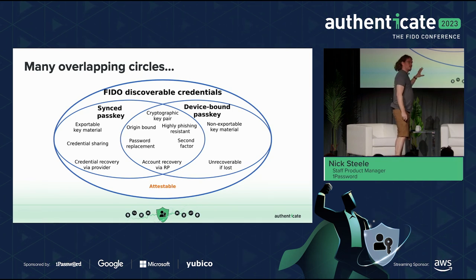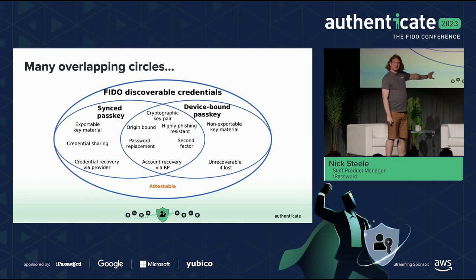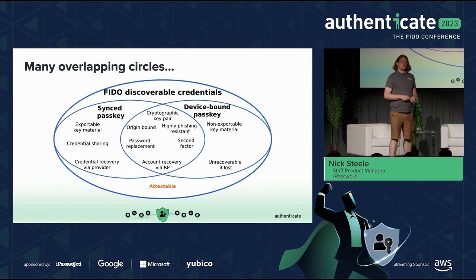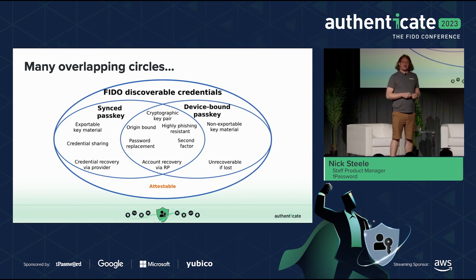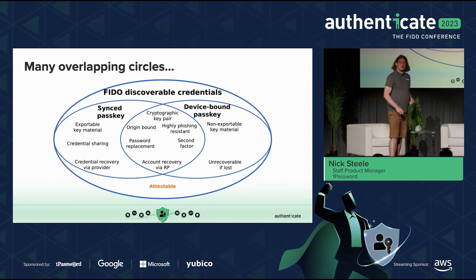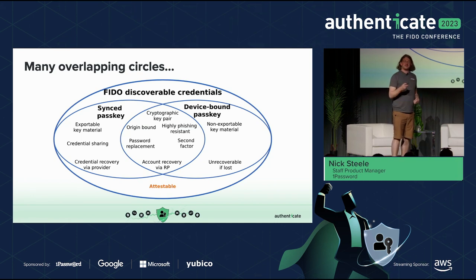Both types of credentials — and non-discoverable credentials as well — are attestable. Attestation is essentially a way to tell the provenance of a passkey by a certain piece of hardware. If I receive a passkey from a YubiKey or from Apple, I should be able to receive an attestation that gives me cryptographic proof that this piece of hardware or this passkey provider can prove to me that they created the passkey in question. As an organization, I can have some insight into the authenticator that was used and decide if I choose to trust it or not, because I may want higher assurance than the authenticator being used.